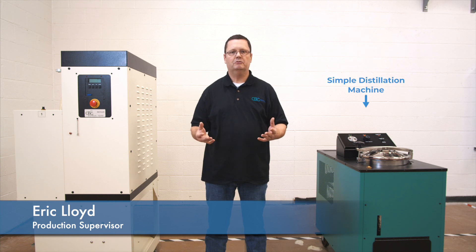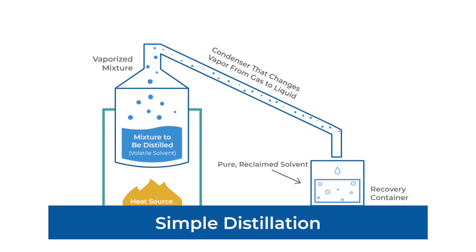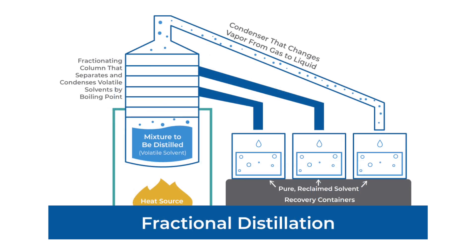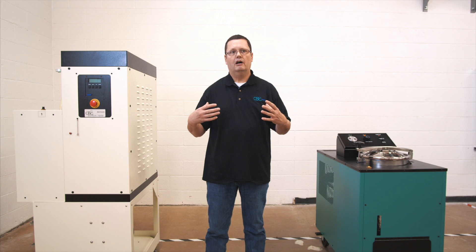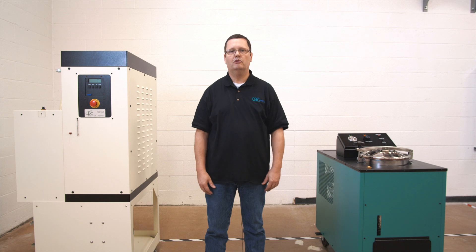If you're recovering the same product on a regular basis, the simple distillation machine is the product that you want to use. Simple distillation is to recover a single solvent into a recovered container to be used at another time. Fractional distillation is a process of separating various component parts into different fractions to be recovered. If you are recovering multiple products, you want to use a fractional machine because that's the machine that will recover multiple fractions for you.